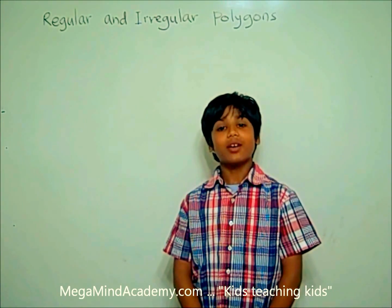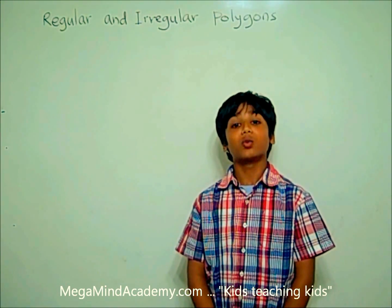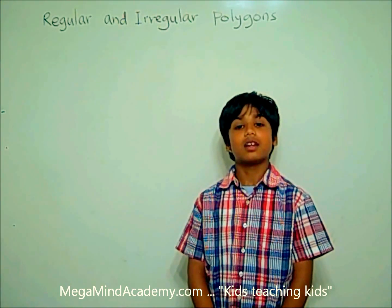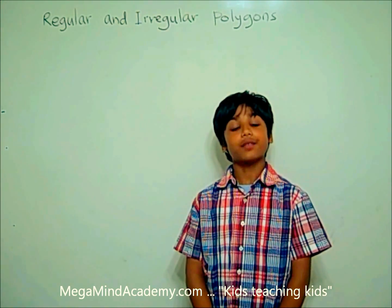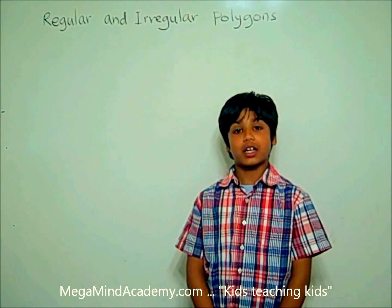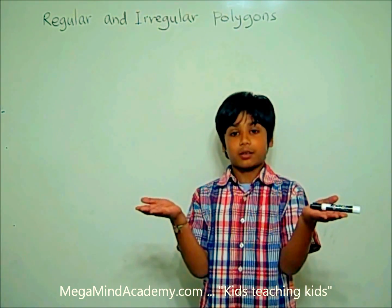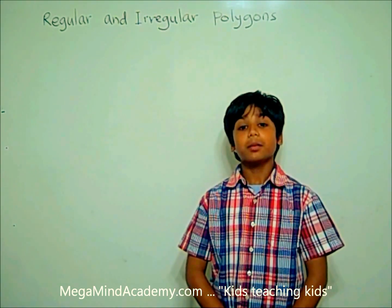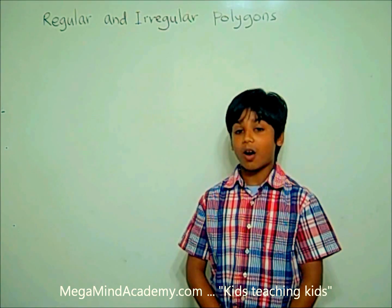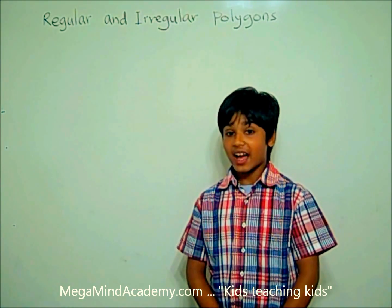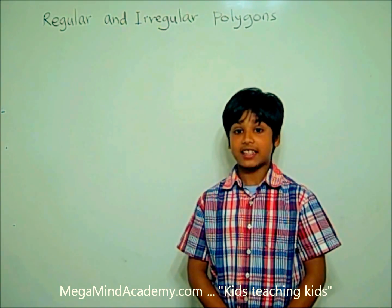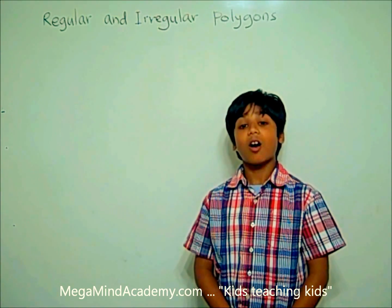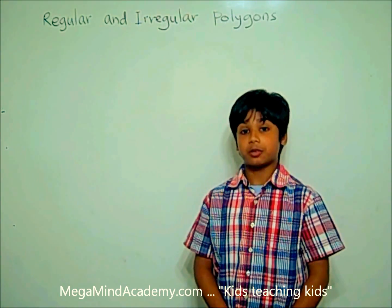Hello! Today we're going to learn about regular and irregular polygons. Let's first start with regular polygons. What are regular polygons? Regular polygons are the polygons which have all the equal sides in length, and all the angles are equal too.